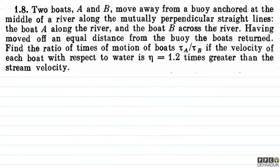Two boats A and B move away from a buoy anchored at the middle of a river along mutually perpendicular straight lines. Boat A moves along the river and boat B across the river. Having moved off an equal distance from the buoy, the boats returned. Find the ratio of times of motion tau A upon tau B, if the velocity of each boat with respect to water is eta equal to 1.2 times greater than the stream velocity.